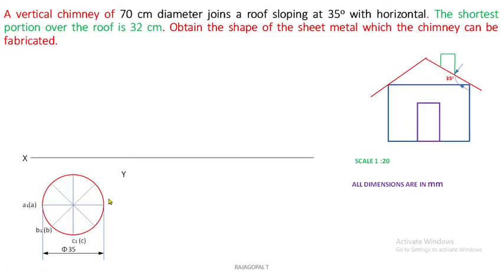Divide the circle into 8 equal divisions and do the notations A to H. Points A, B, C, D, E, F, G are the base of the chimney — invisible from the top view. A1, B1, C1, D1 up to H1 is the top face of the chimney which is visible. The top face of the chimney is visible, and the bottom face exactly on the roof may not be visible from the top view.